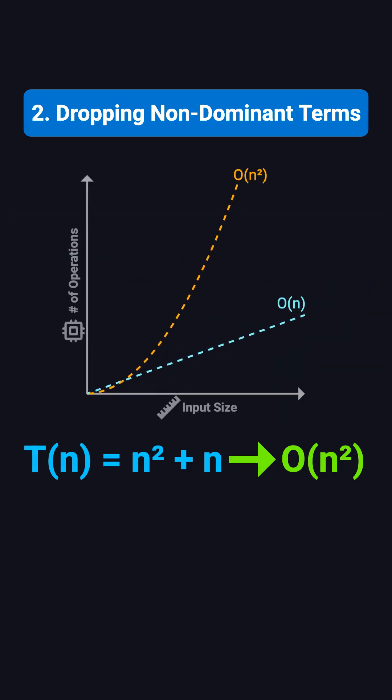Why do we do this? Because when n is very large, n squared grows much faster than n, so n has almost no impact. This lets us focus on the dominant factor affecting performance.